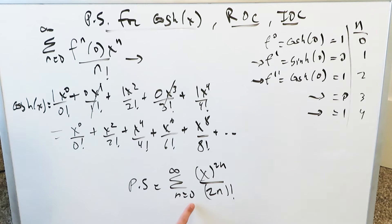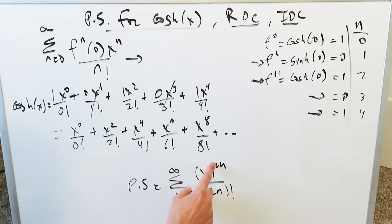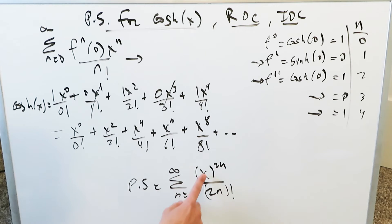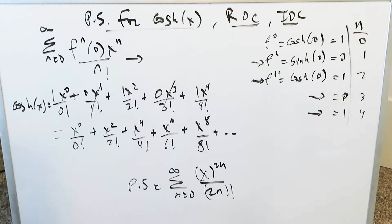We can confirm this rule. When n equals 0: x to the 0 over 0 factorial — matches. When n equals 1: x squared over 2 factorial — matches. When n equals 2: x to the 4 over 4 factorial — matches. When n equals 3: x to the 6 over 6 factorial — matches. The power series rule for hyperbolic cosine is confirmed.